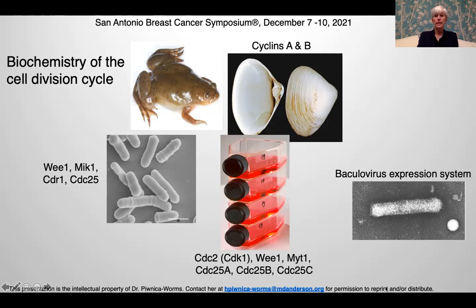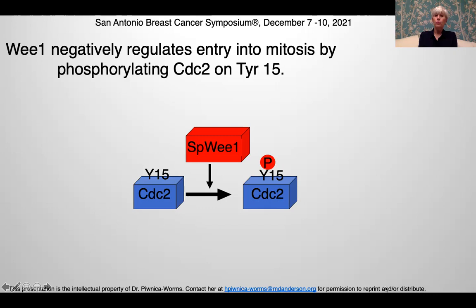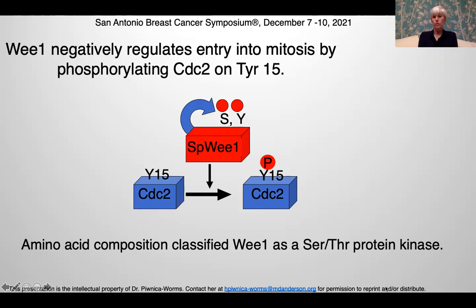The first major discovery we made was that fission yeast WEE1 was able to phosphorylate CDC2 on tyrosine 15. This was somewhat of a heretical finding in the field, because the amino acid composition classified WEE1 as a serine-threonine protein kinase, not a tyrosine kinase. In addition, we found that fission yeast WEE1 would autophosphorylate on both serine and tyrosine residues — again an unexpected finding, because at the time protein kinases could phosphorylate either serine and threonine, or tyrosine, but never both.